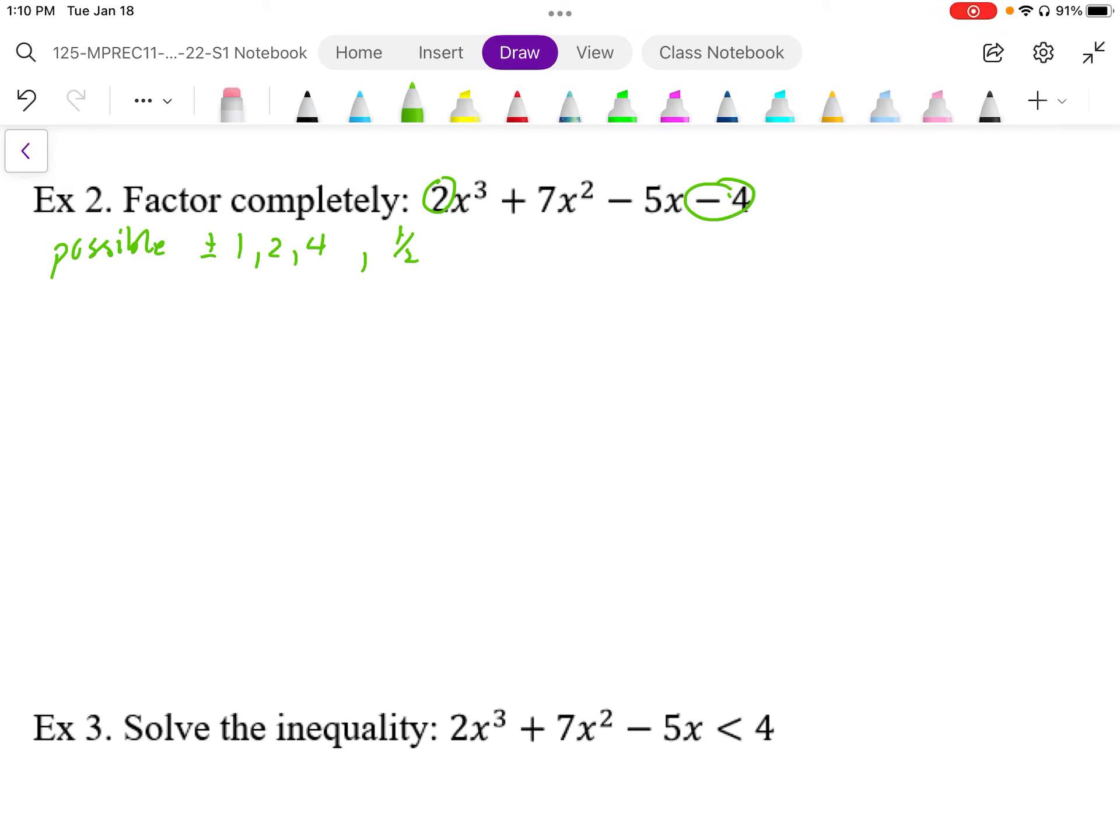So we get plus minus 1 half, which is a unique factor. When we test this, we're just going to start with the easiest one, so f of 1. So we plug in f of 1, we get 2 plus 7 minus 5 minus 4. This is equal to 0.